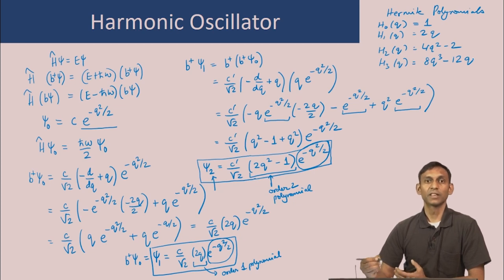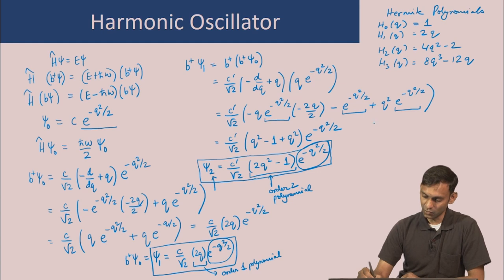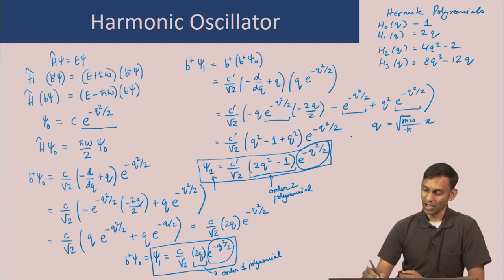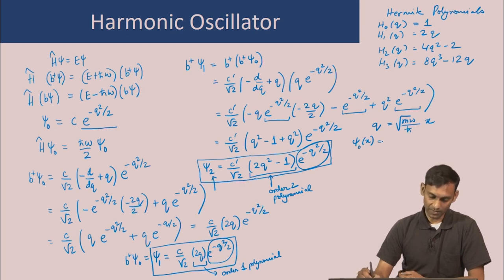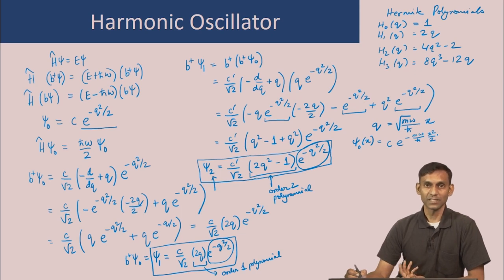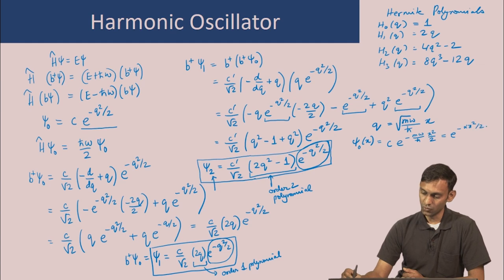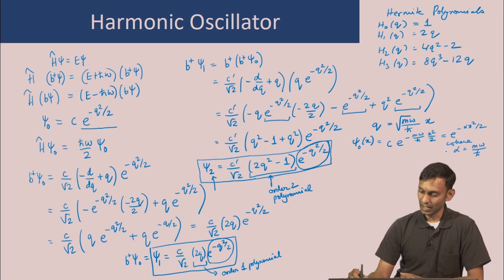The variable q is the dimensionless coordinate introduced to simplify the derivation; q is related to x as q = √(mω/ℏ)·x. So all functional forms are actually functions of x. For example, the lowest eigenfunction ψ₀(x) = C·e^(−(mω/ℏ)x²/2), which can be written as C·e^(−αx²/2) where α = mω/ℏ, or in terms of k, α = √(km)/ℏ.